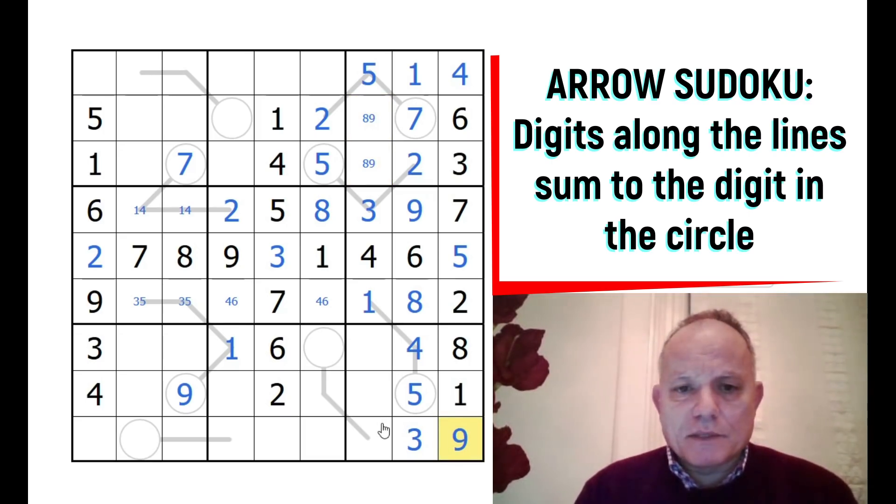We've got 8-9 to complete the middle column, 8-7 to complete the first column. That's all very straightforward. This can't be a 7 anymore.